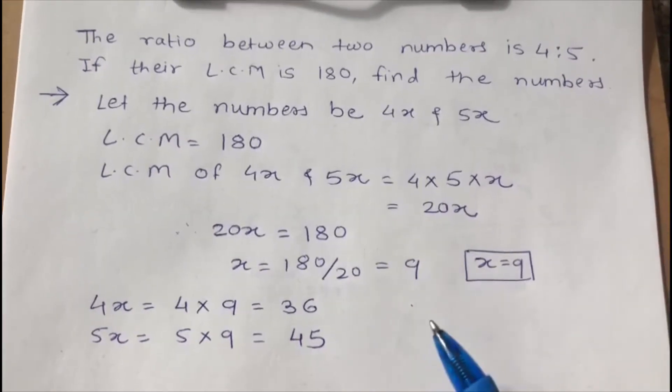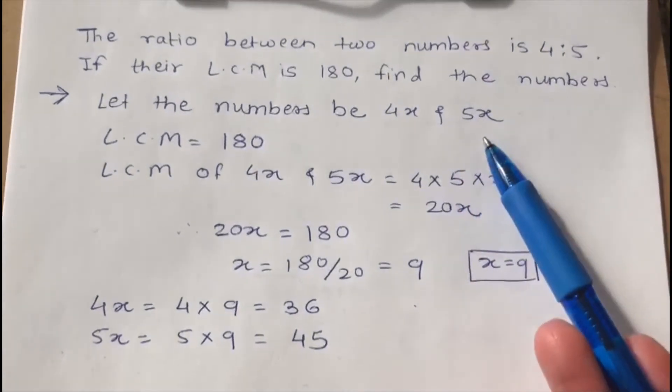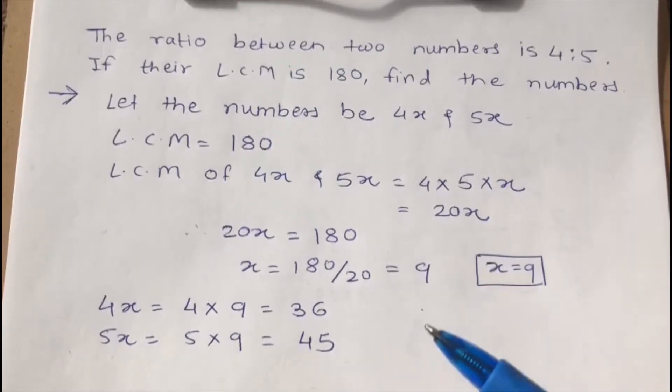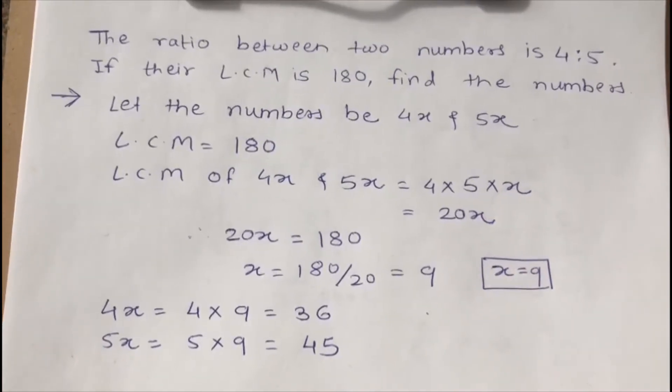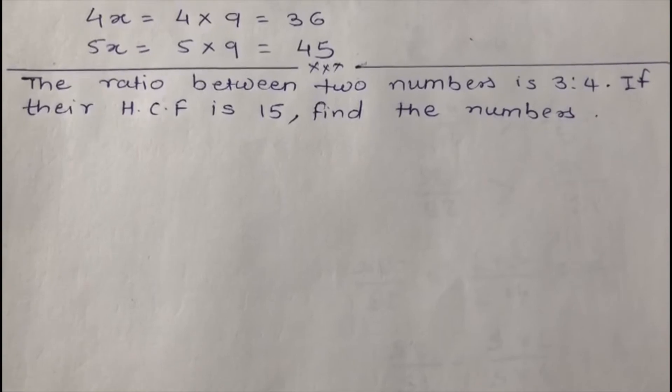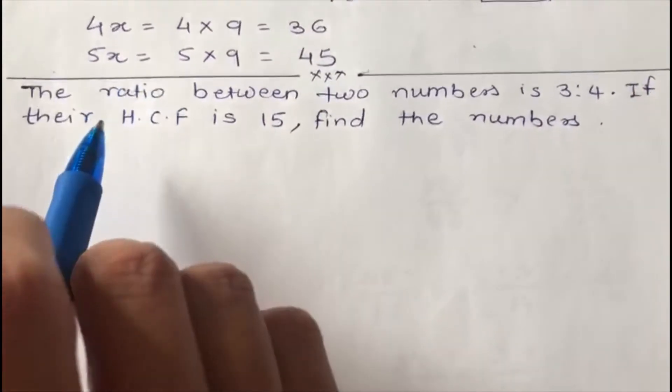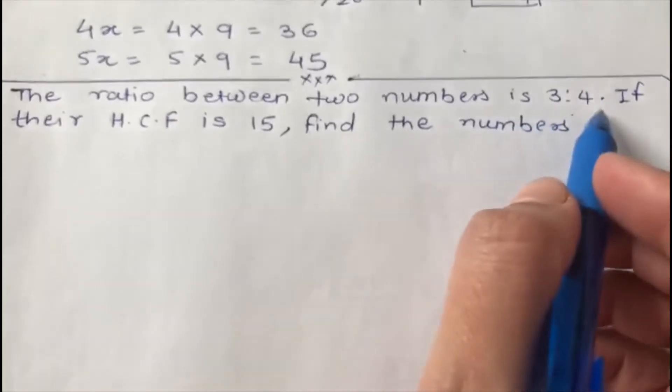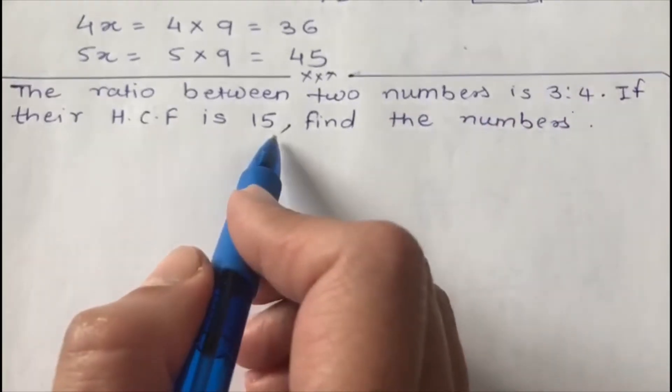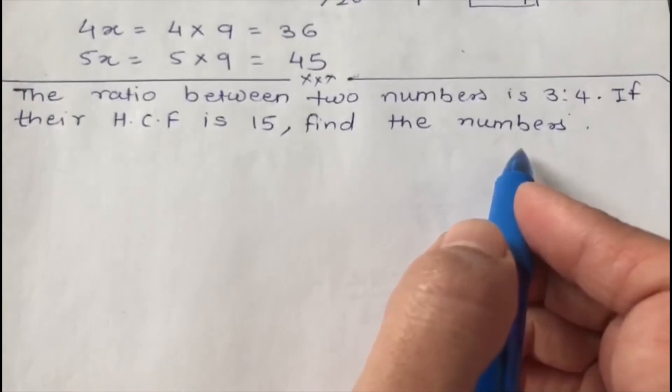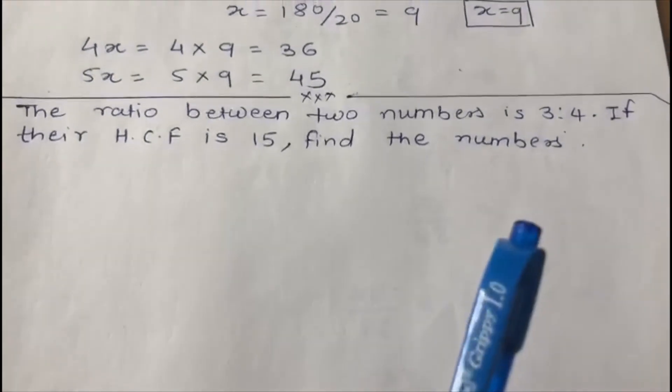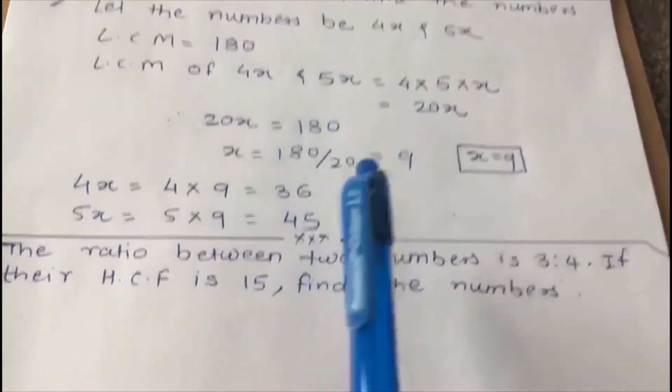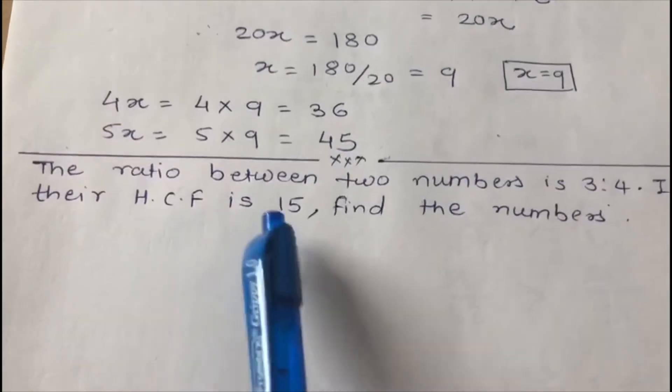So you have got an idea when the ratio is given and their LCM is given, how to find those numbers. So let's take one more example. Second example is: the ratio between two numbers is 3 is to 4, and if their HCF is 15, find the numbers. In first example we have seen they have given LCM, but in this example they have given HCF.